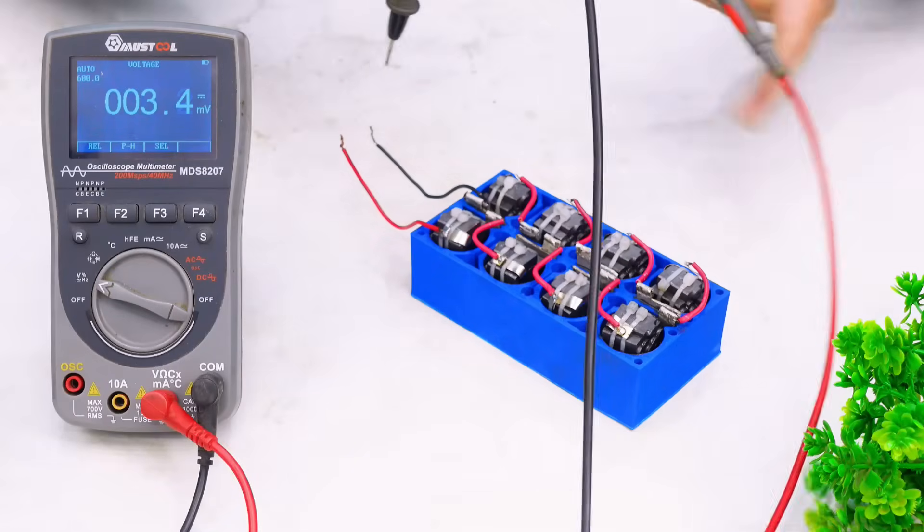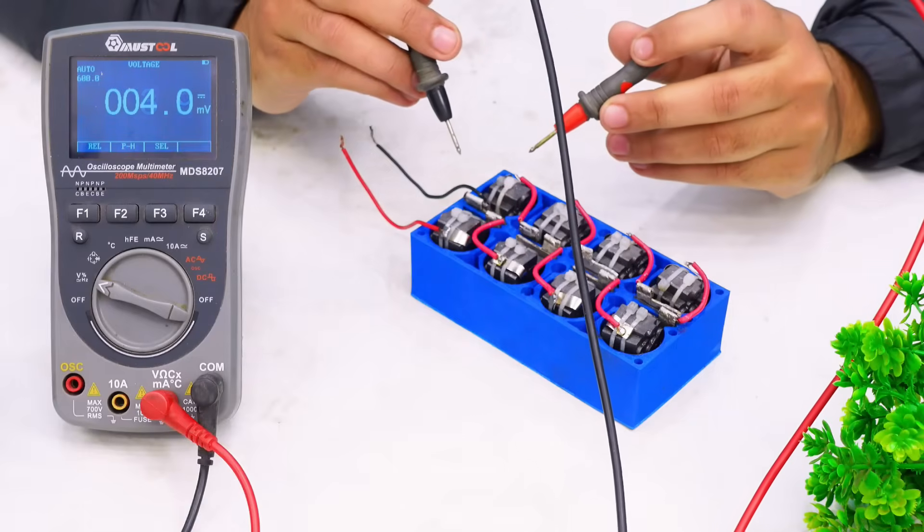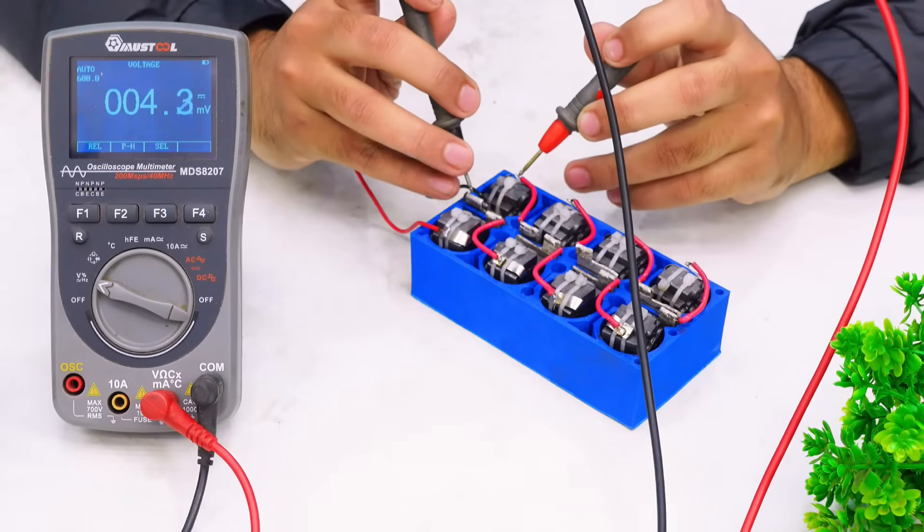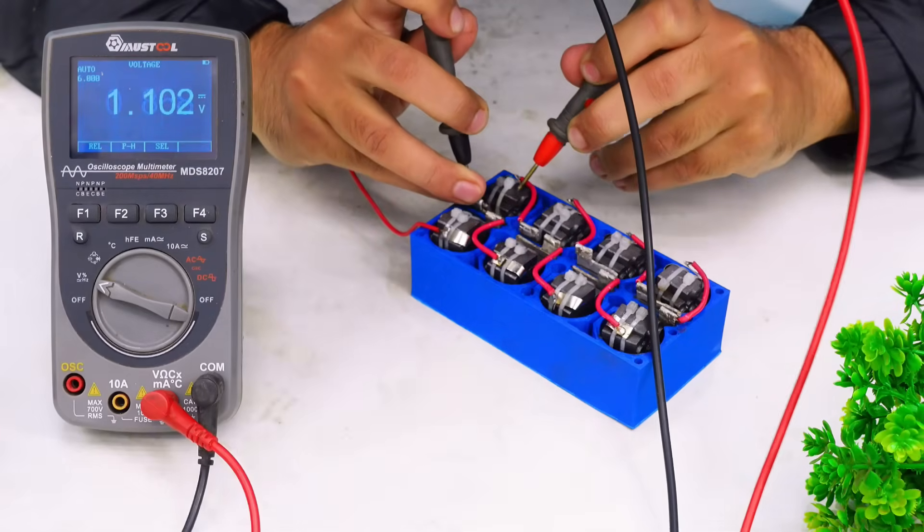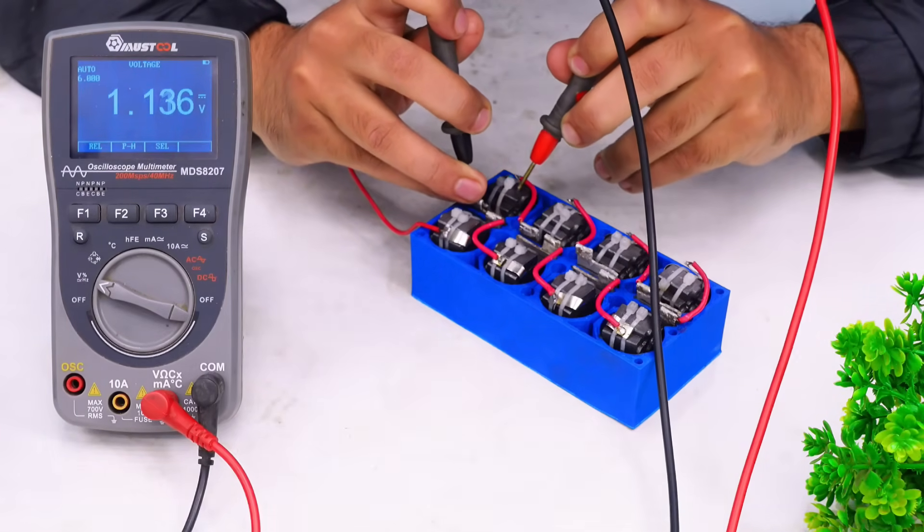So the test is complete and now I'm going to show you something very important. Here I'm going to test the voltage of individual cell. So the first cell is this one. Here we can see that the voltage is 1.14 volts after complete 12 hours.